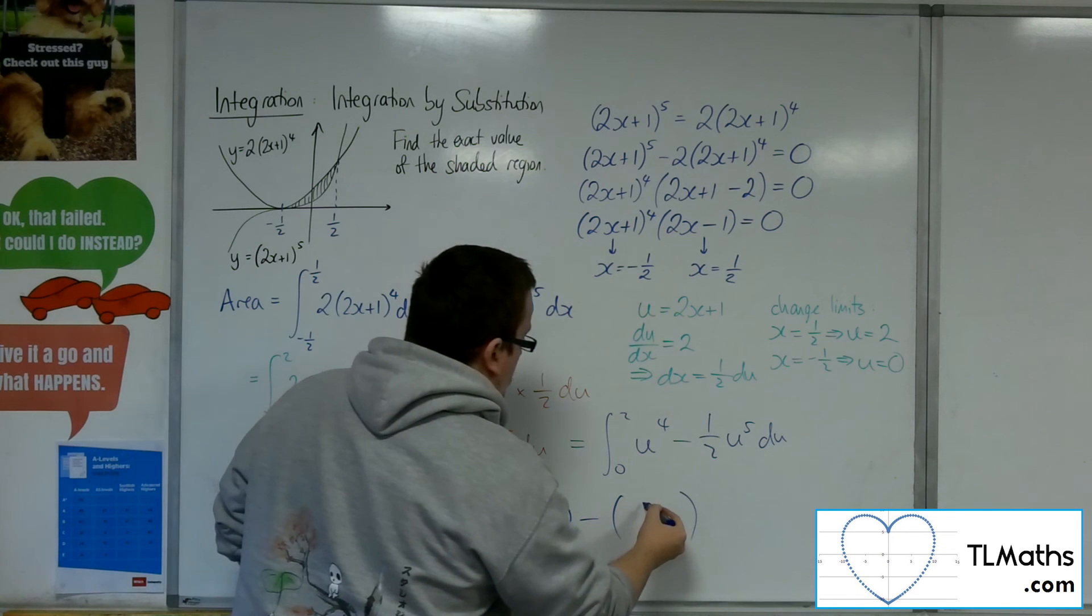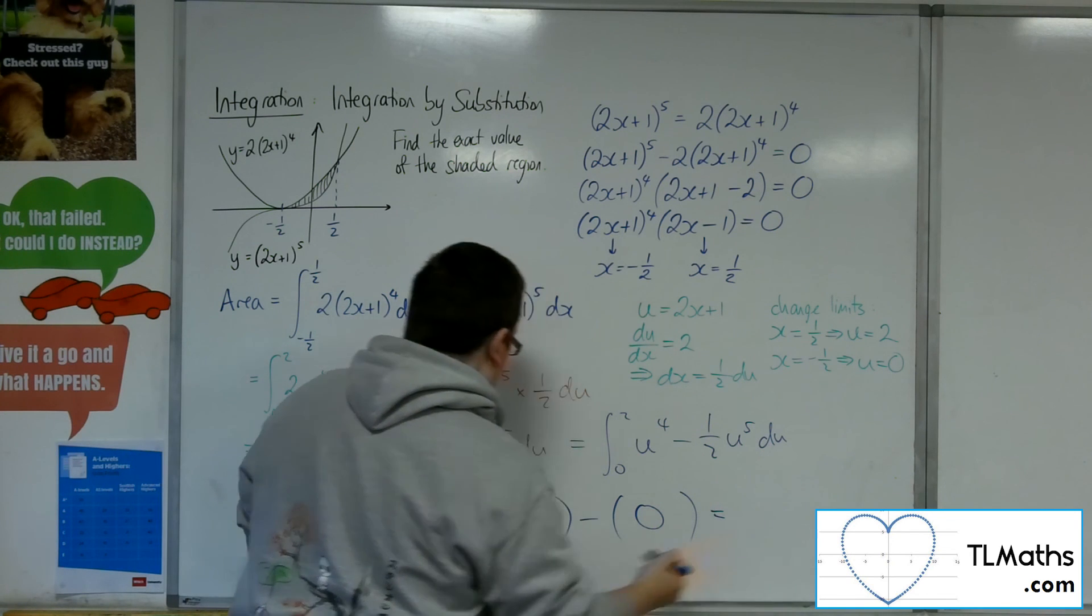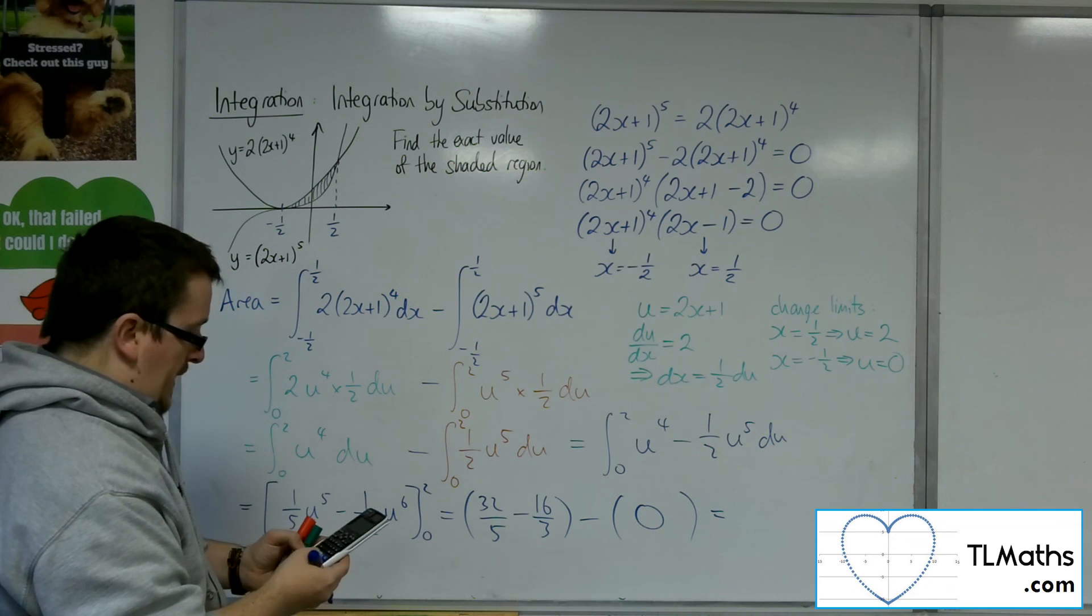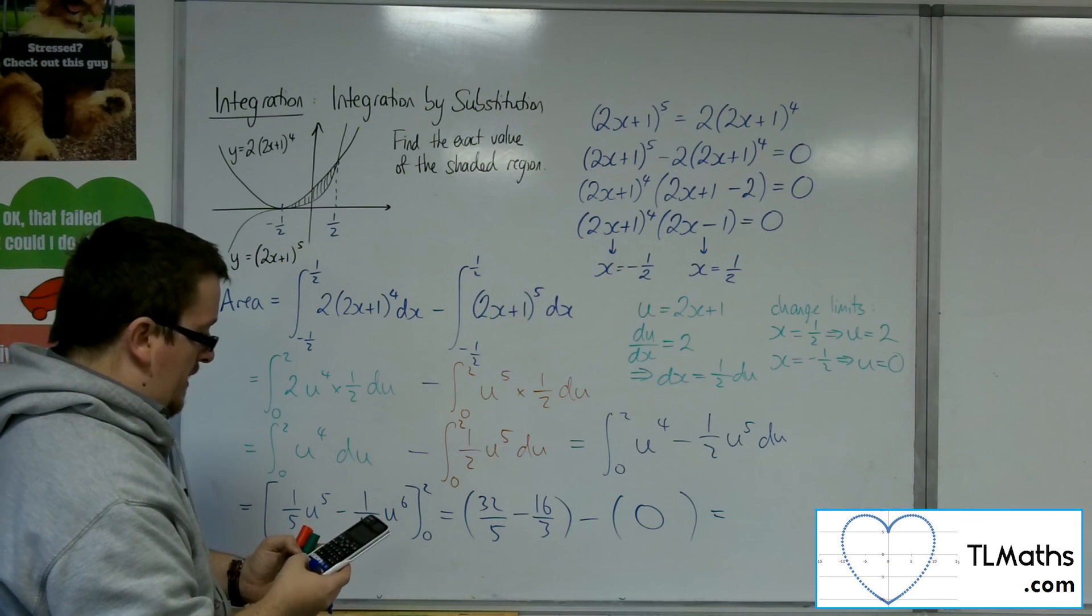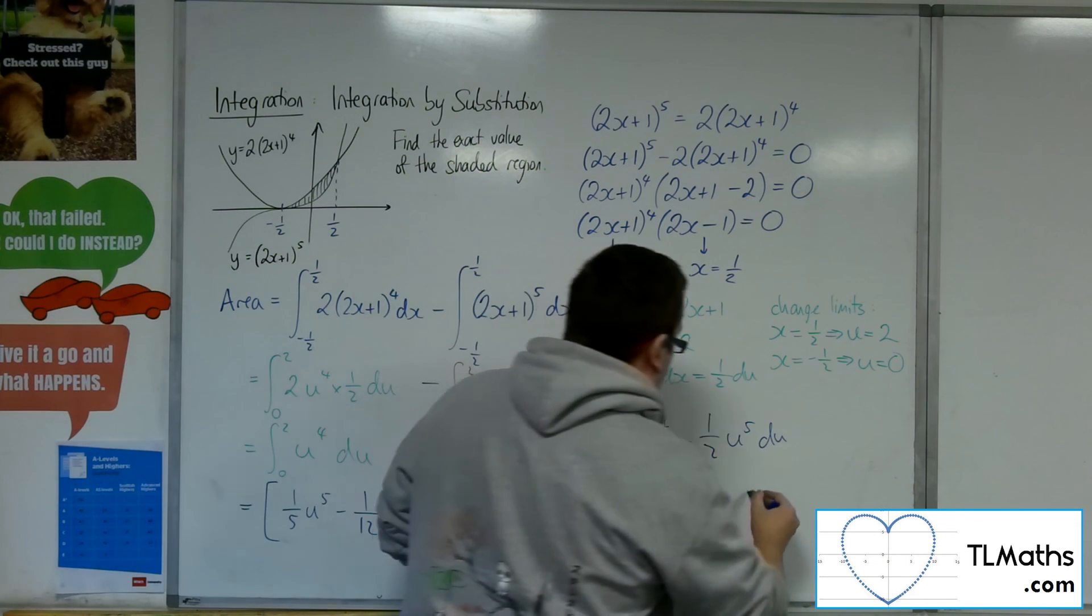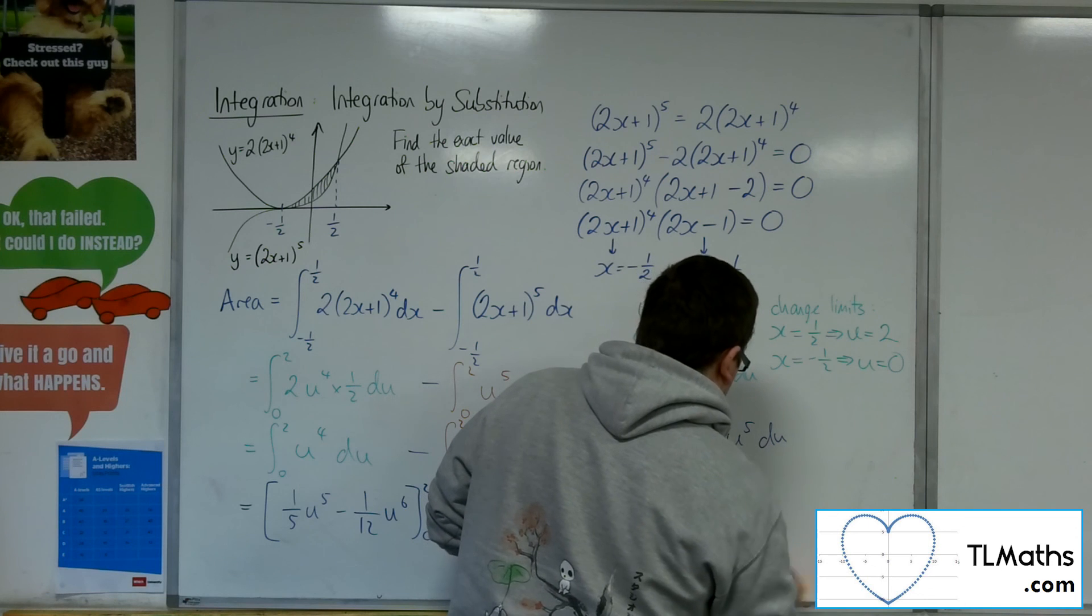And then substituting in 0, we're just going to get 0. So 32 fifths take away 16 thirds is 16 fifteenths.